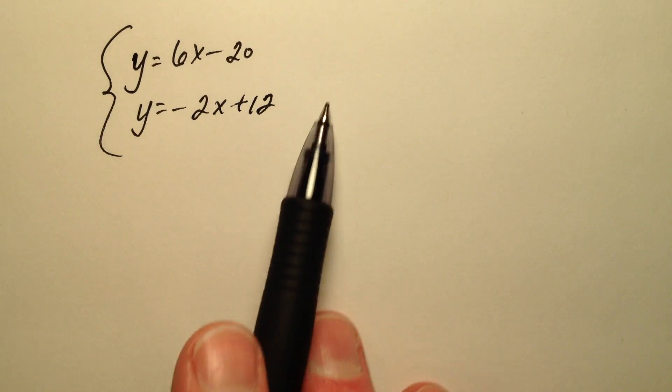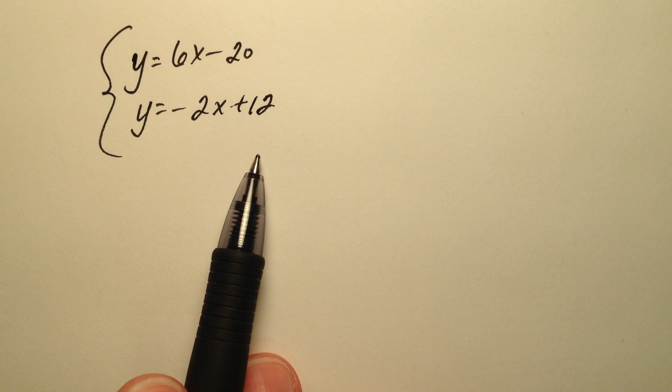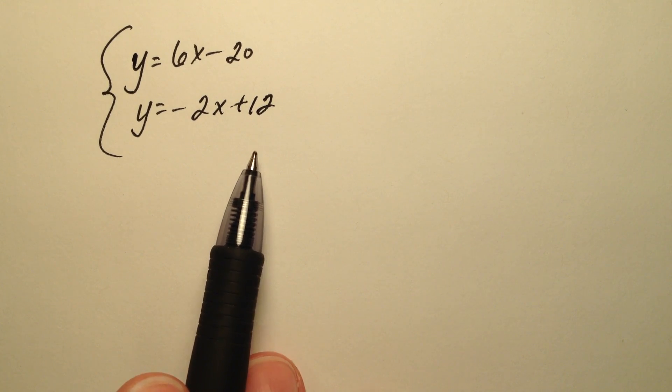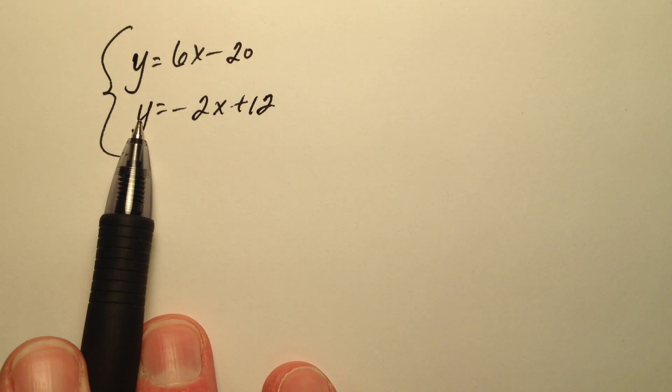In this example, we're going to solve this linear system using substitution. Recall that the first step of substitution is to solve one of these equations for a particular variable. It seems like both equations have already been solved for y.